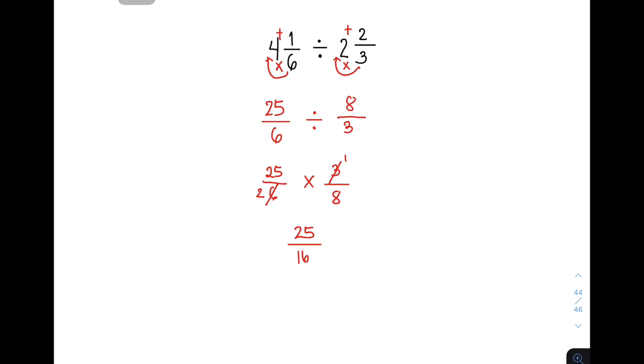So, kapag nakakuha kayo na mixed fraction as your quotient, ang gagawin nyo is you need to convert it into mixed numbers. So, paano ginagawa yan? Let's say, for example, you have 25 over 16. So, you need to divide 25 by 16. 25 divided by 16, that will give you 1. And 1 times 16, that is 16. Subtract mo lang. This one is 9.